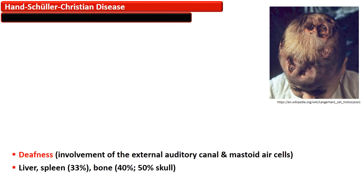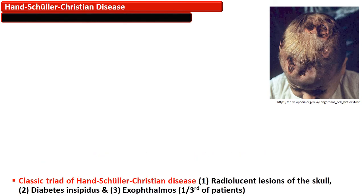Liver and spleen are affected in 33% of cases. Bone is involved in 40% of cases, and in about half of these cases the skull is the most common site. The classical triad of Hand-Schüller-Christian disease is radiolucent lesions of the skull, diabetes insipidus, and exophthalmos — present in one-third of patients.